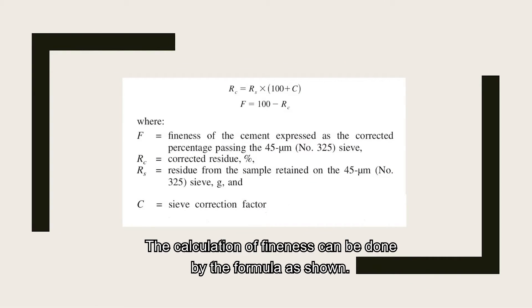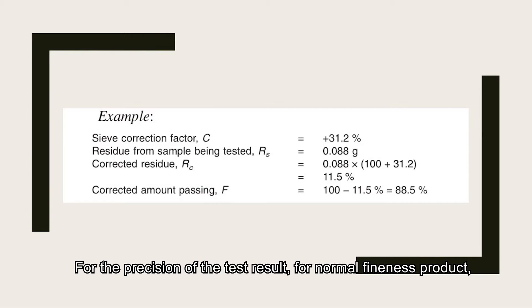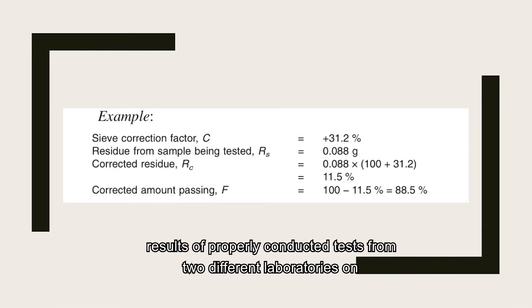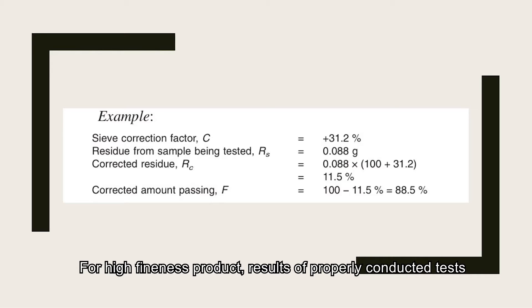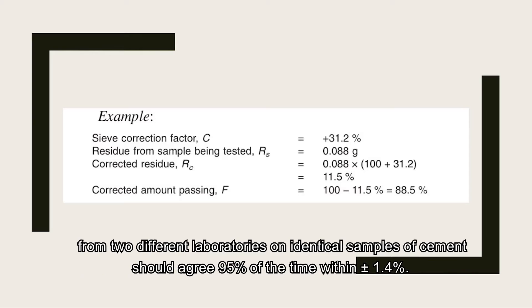This is the determination of the correction factor. The calculation of fineness can be done by the formula as shown. From the precision of the test results for normal fineness products, results of properly conducted tests from two different laboratories on identical samples of cement should agree 95% of the time within plus or minus 2.11%. For high fineness products, results of properly conducted tests from two different laboratories on identical samples of cement should agree 95% of the time within plus or minus 1.4%. Mission accomplished!